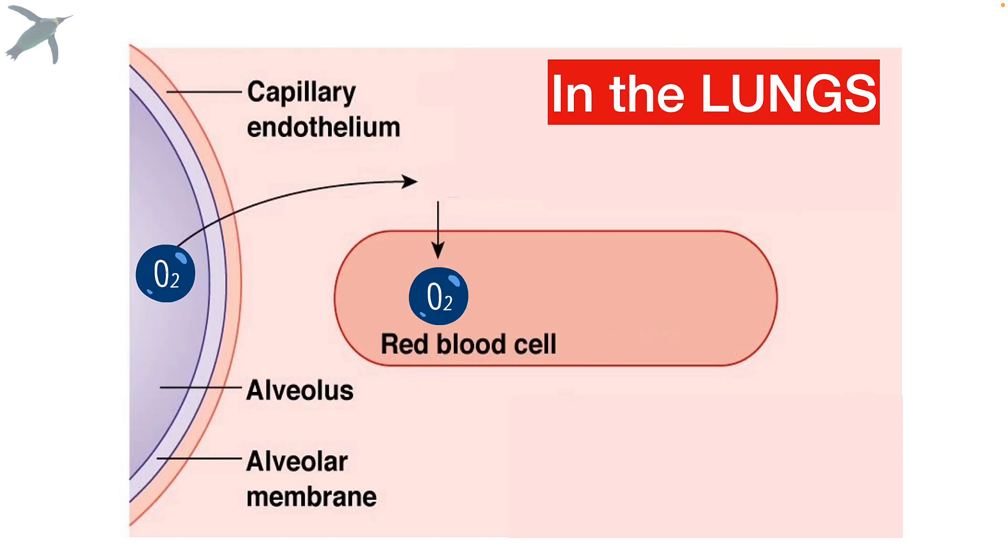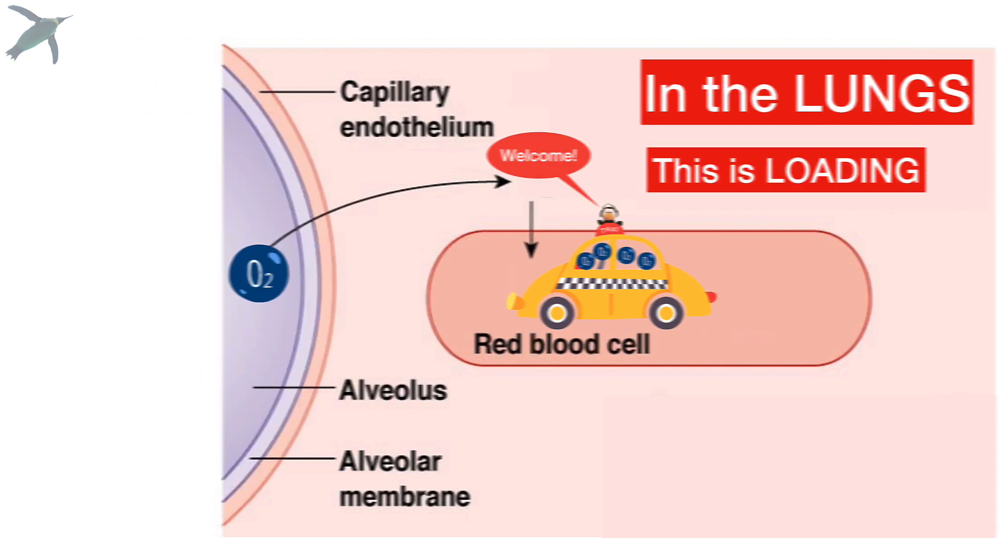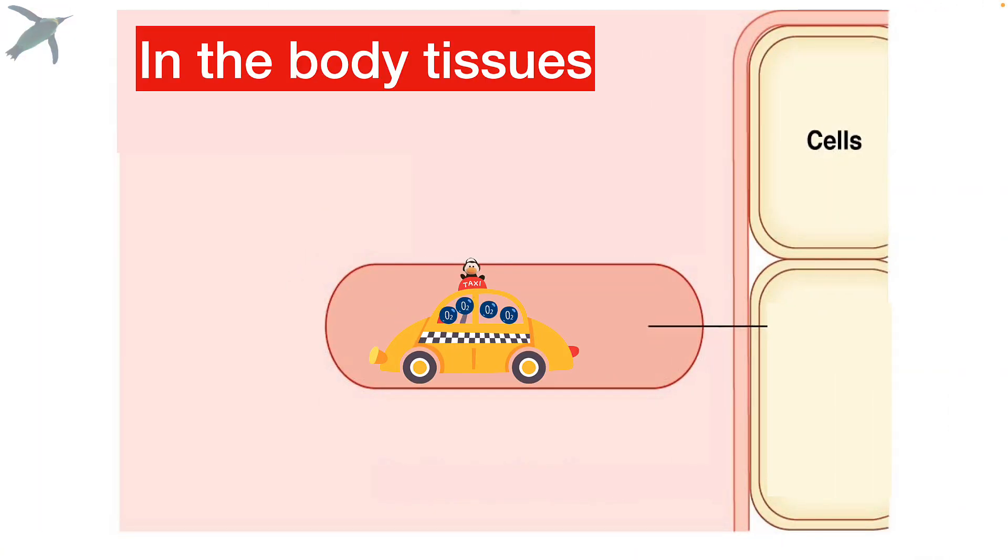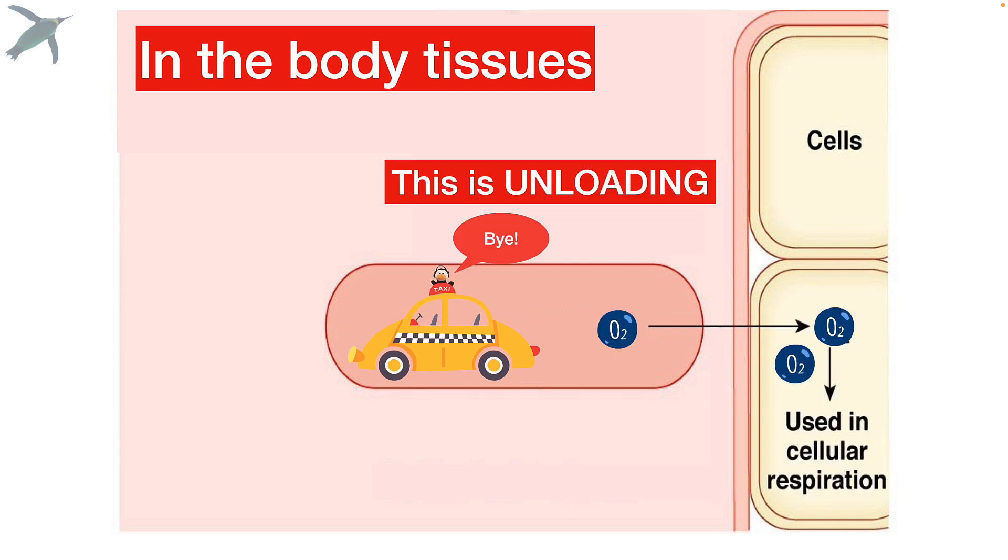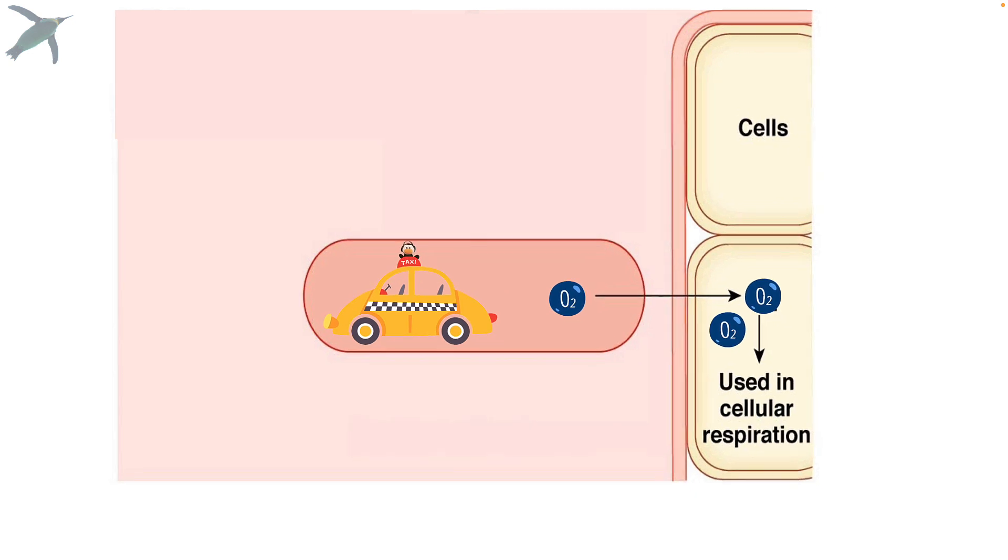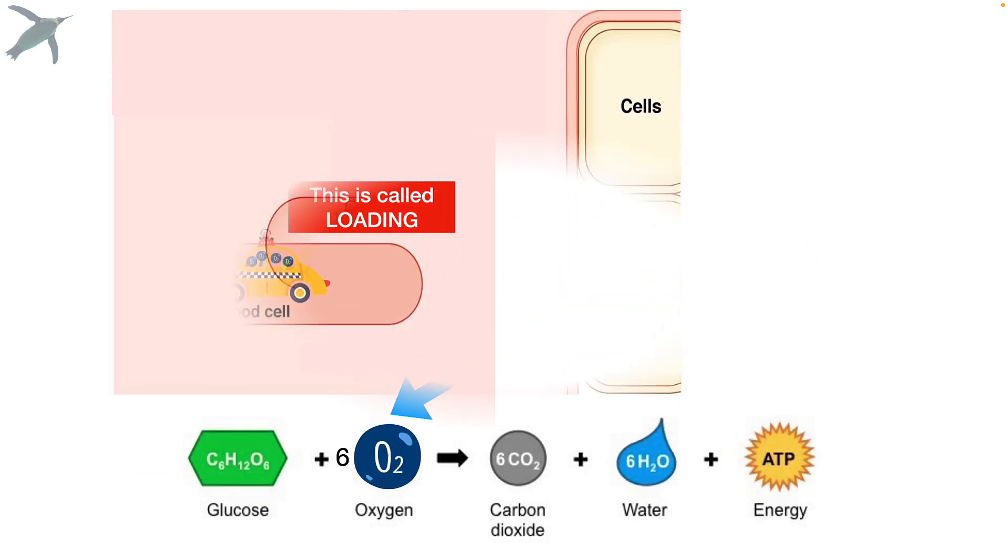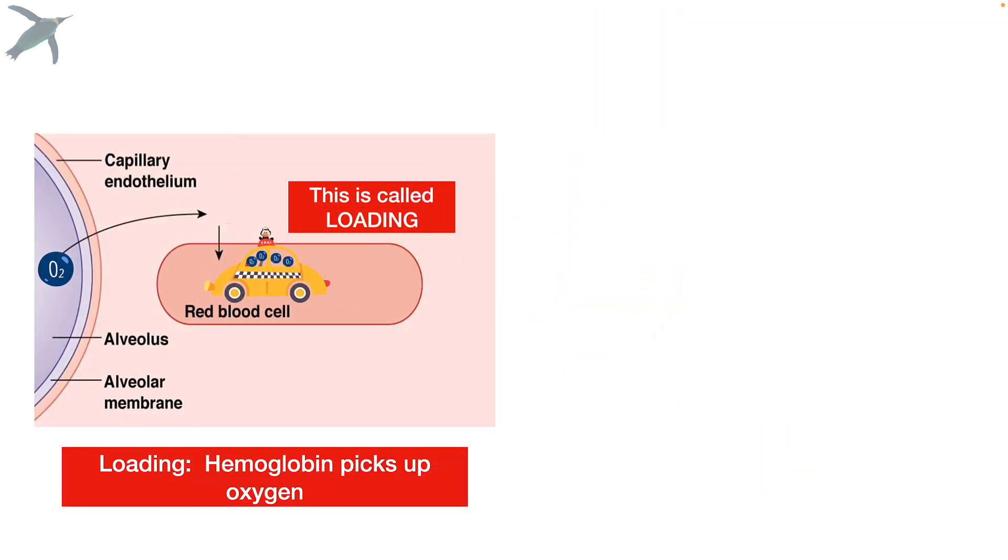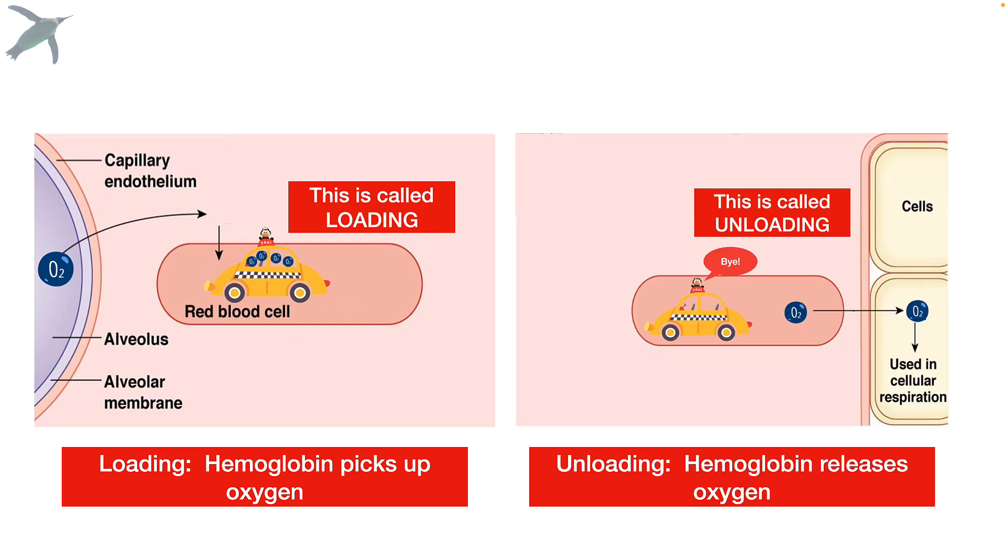In the lungs, the oxygen from the alveoli will diffuse into the blood and immediately get picked up by the hemoglobin. Oxygen really does not like to dissolve in blood plasma, so that's why the taxi is needed. This is called loading. Then the hemoglobin taxi will go out through the left side of the heart, and it will unload that oxygen to cells in the body. And the cells, of course, will use this oxygen for cellular respiration. So you with me so far? This is loading, when hemoglobin picks up oxygen in the lungs. And this is unloading, when hemoglobin will release that oxygen to cells of the body that need it.